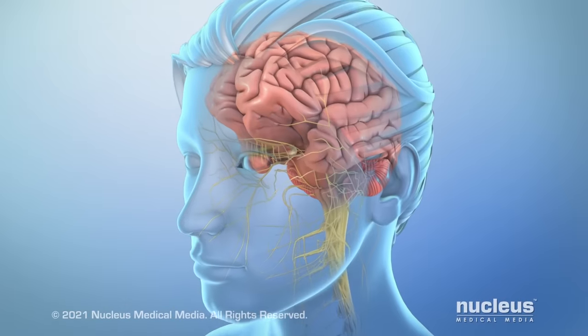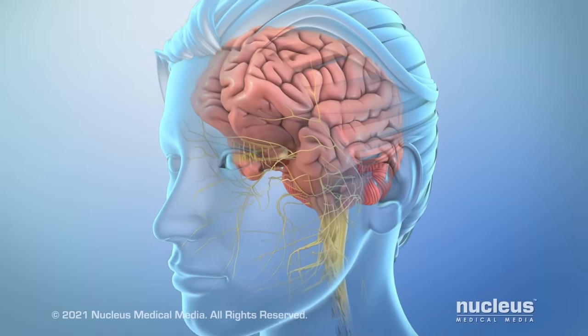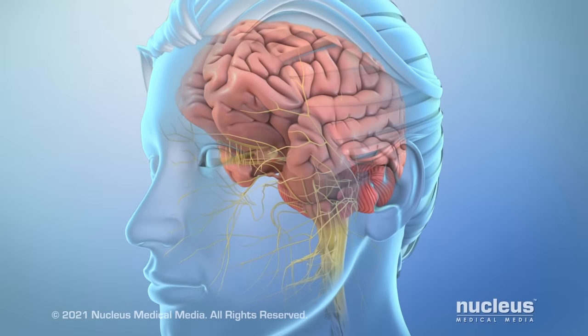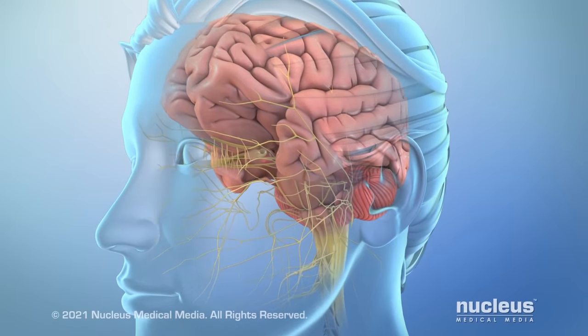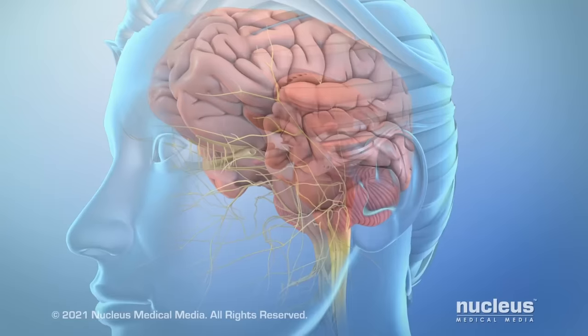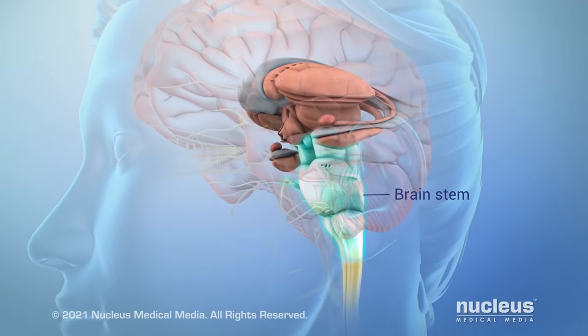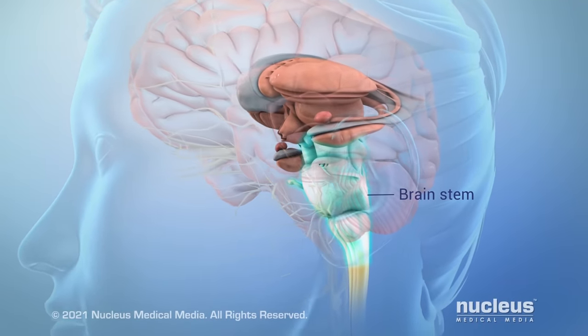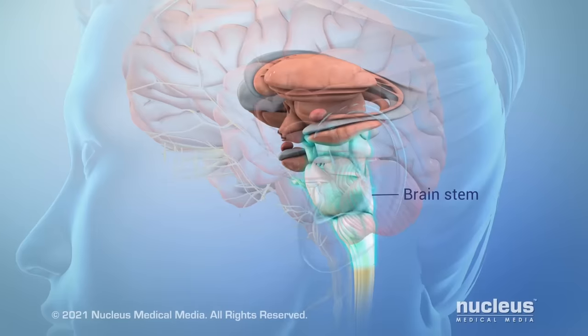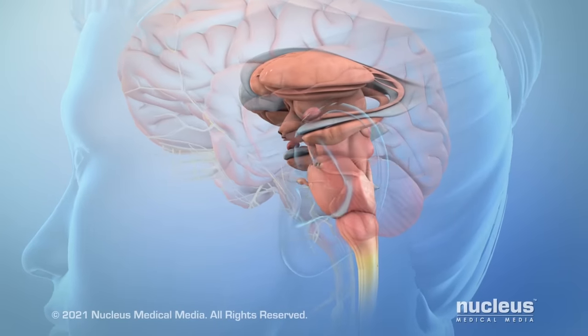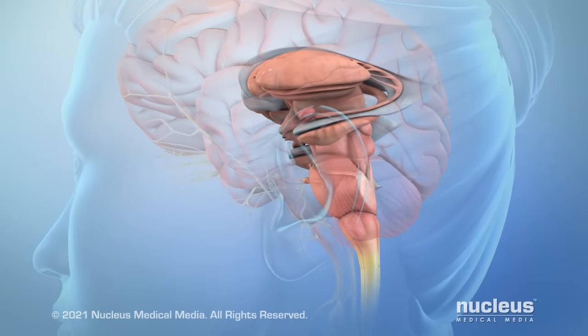Communication with the brain occurs via pathways and nerve centers at the base of the brain, called the brainstem. The brainstem helps control sleep, heart rate, and breathing.